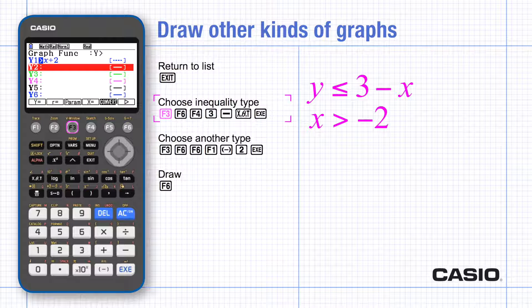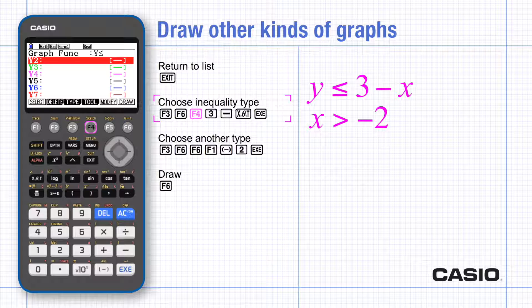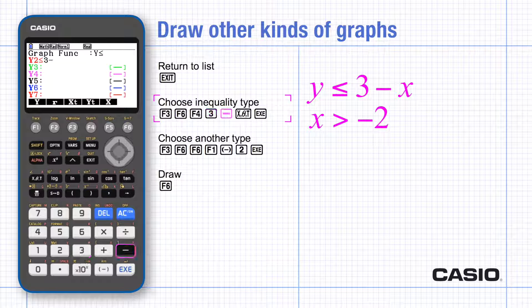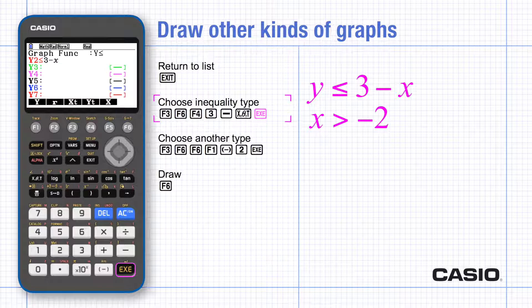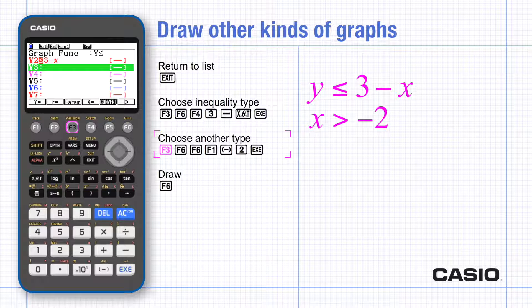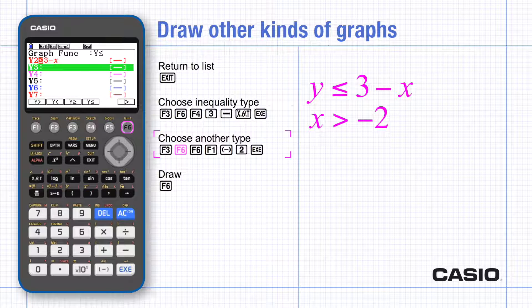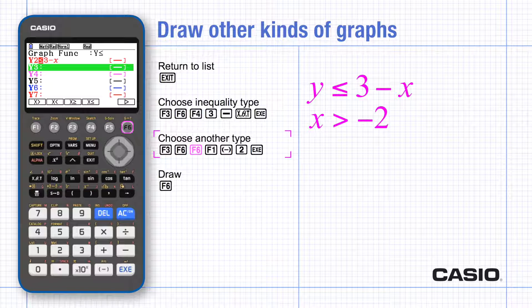And then choose the type of inequality from the second set of options. Use the x theta t key for the y and choose the inequality. And choose the next type of inequality from the third page of options. And now the x theta t key will give x.